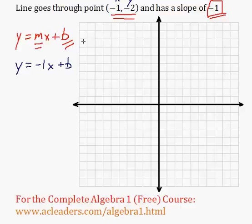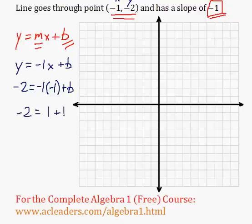So x is -1 and y is -2. So y is -2, -1 times x, and x is -1 plus b. So right here we have -2 = -1 times -1 is positive 1 plus b.